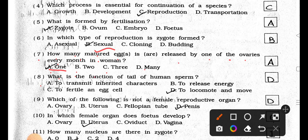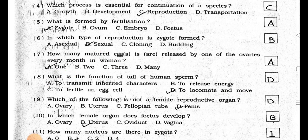Number 8. What is the function of the tail of human sperm? A. To transmit inherited characters, B. To release energy, C. To fertilize an egg cell, D. To locomote and move. Answer is Option D, to locomote and move.